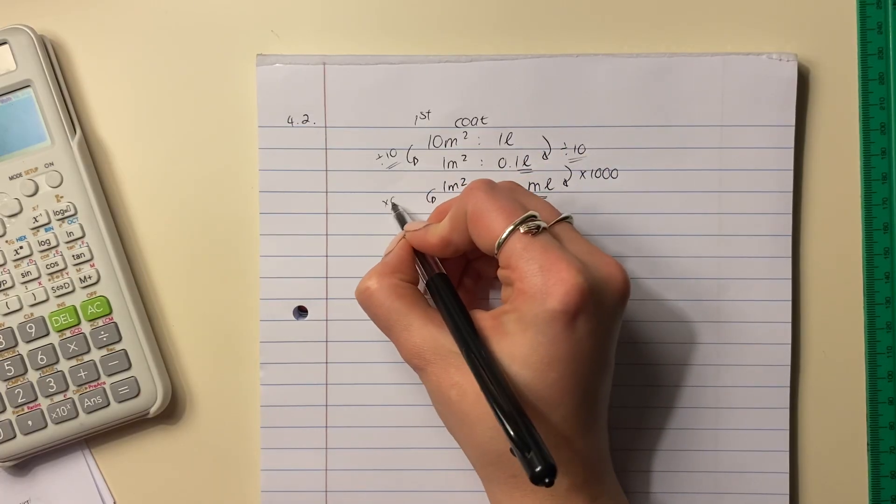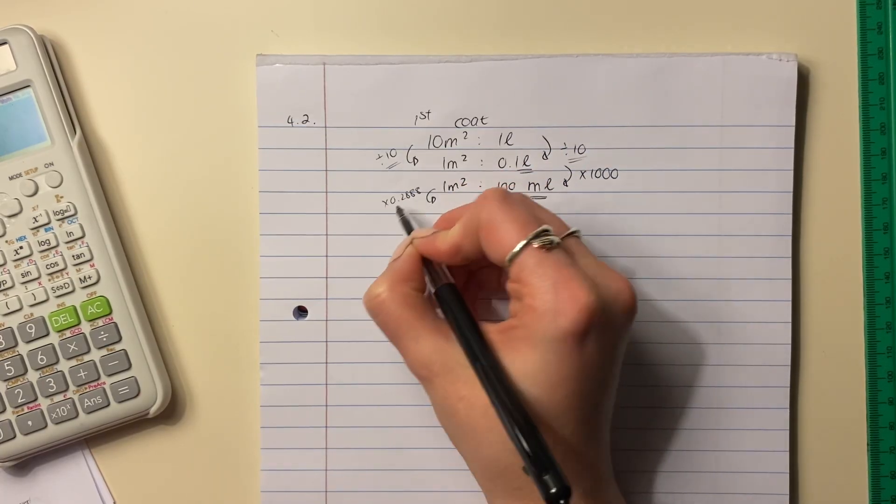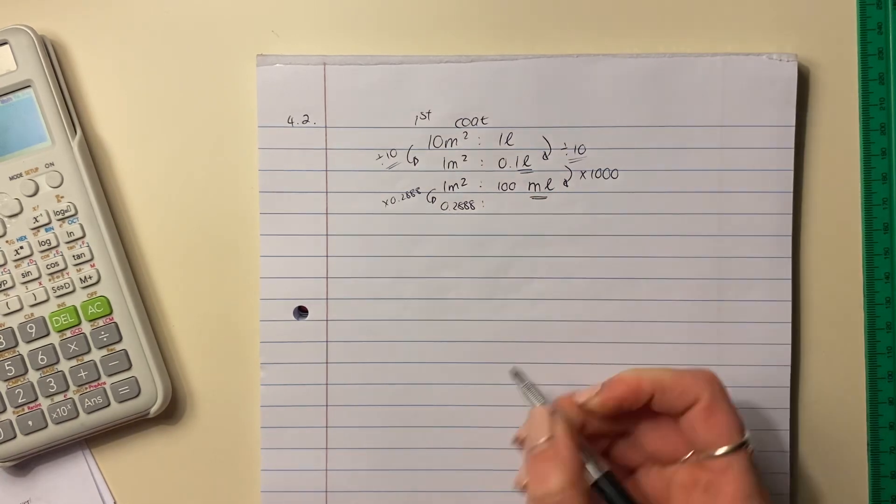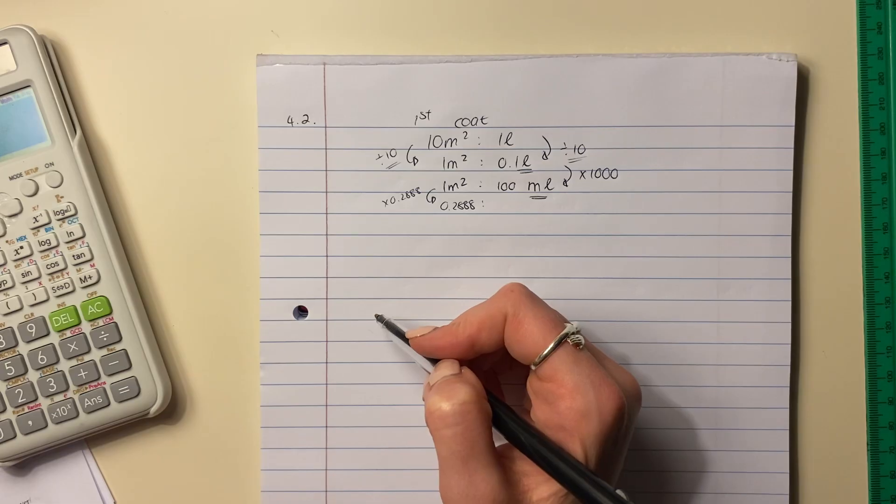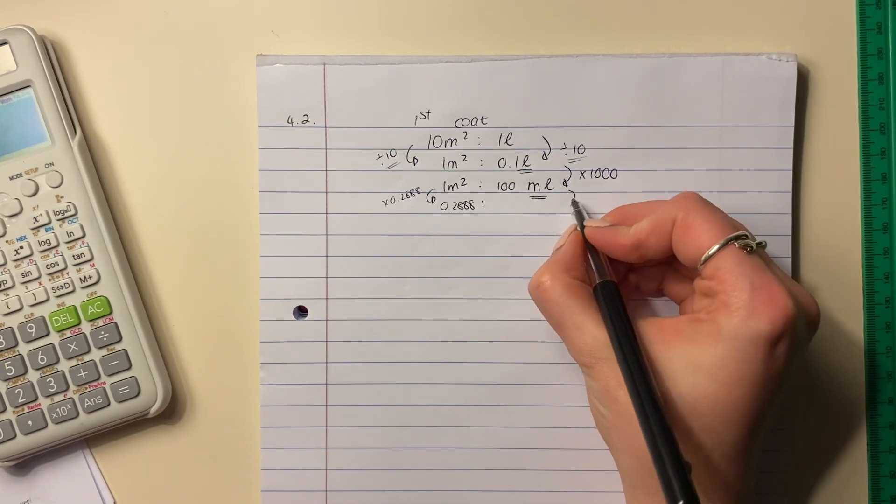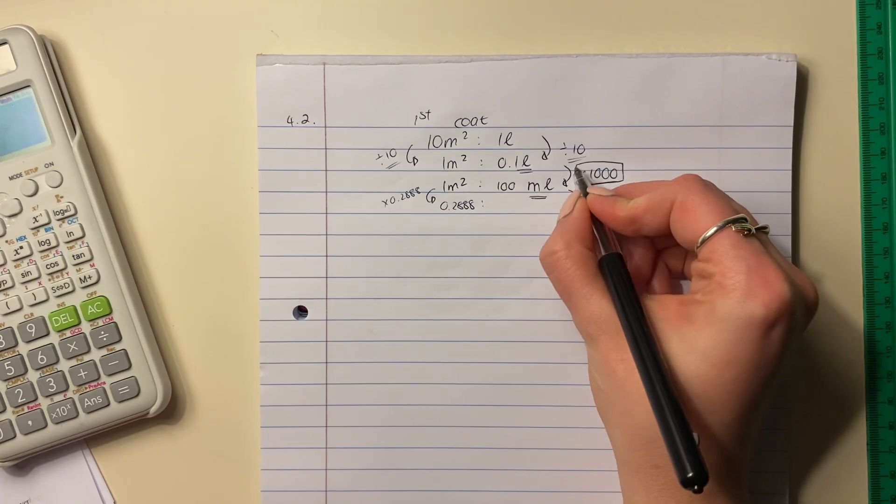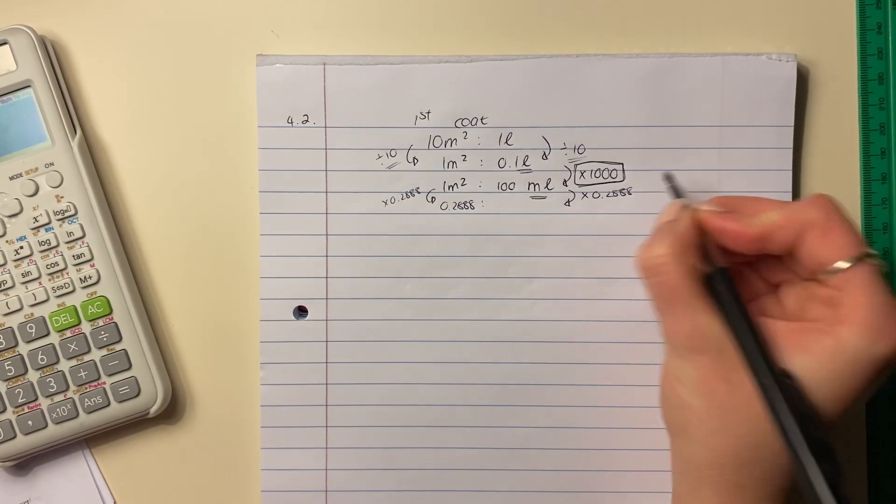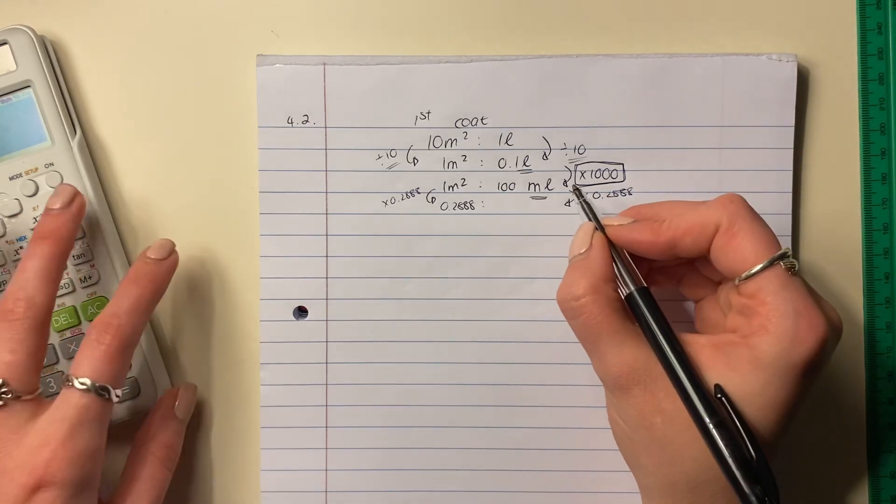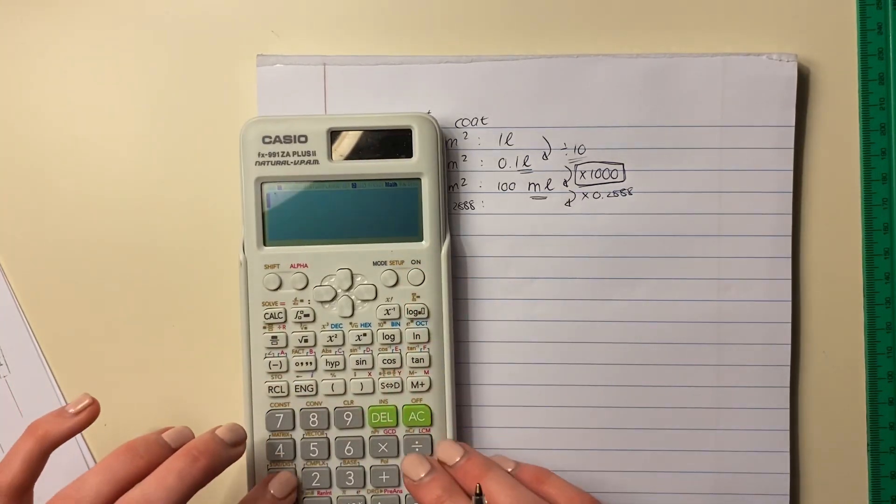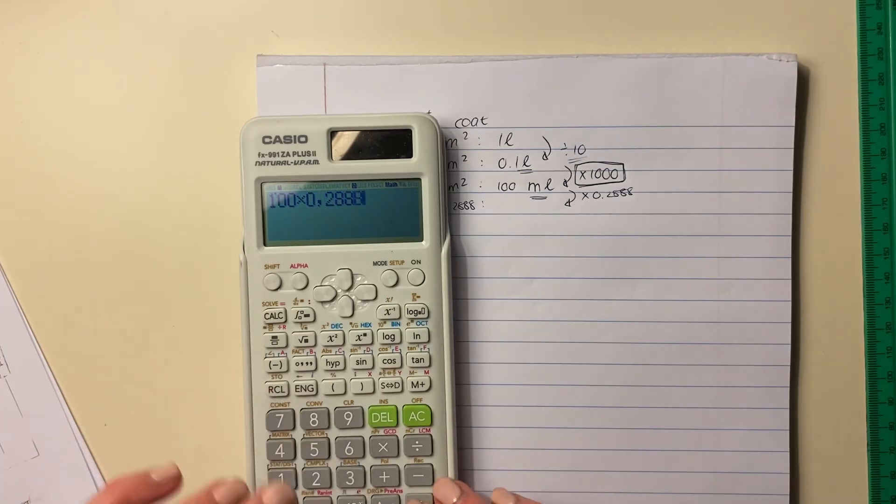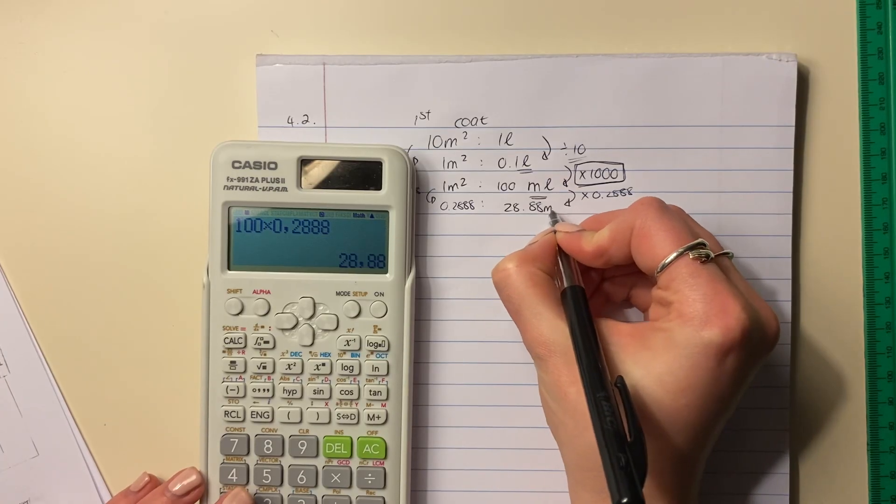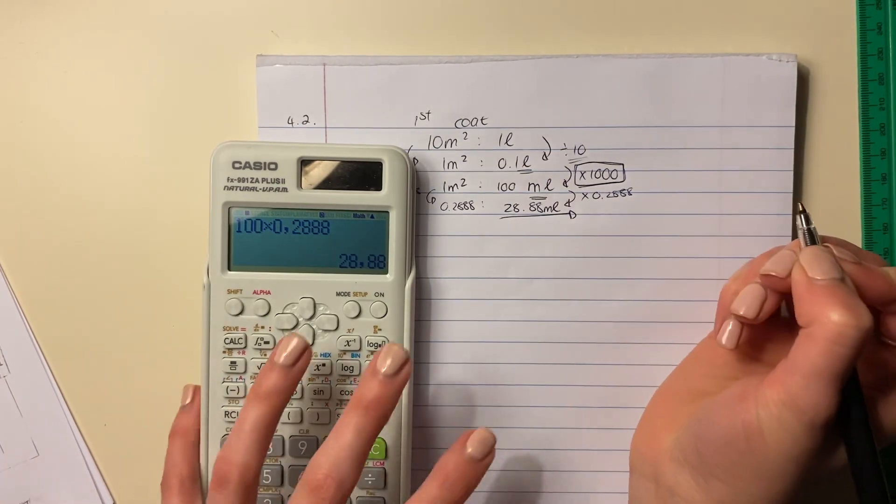So that is what one meter squared equals. Now, the surface area was 0.2888. So that's what we need on this side. So we times that side by 0.2888. I'm just going to put this in a little box to show you that side is different. We're going to times this side by that same amount. So we're going to say 100 times by 0.2888, and my answer is 28.88 milliliters. So that's my first coat.